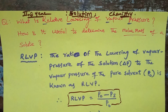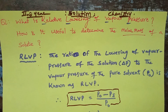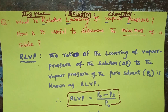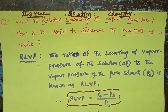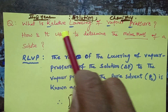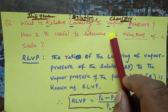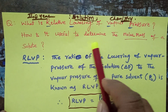Good morning students. Today we are discussing second year chemistry. The name of the chapter is Solution. In this chapter, a very important question is: how is relative lowering of vapor pressure related to the molar mass of solute?